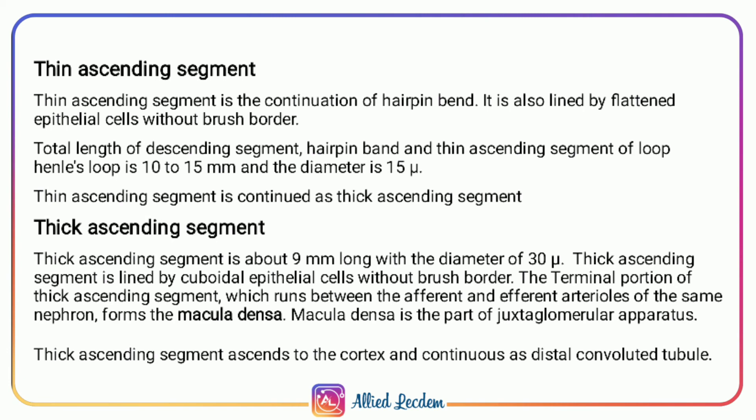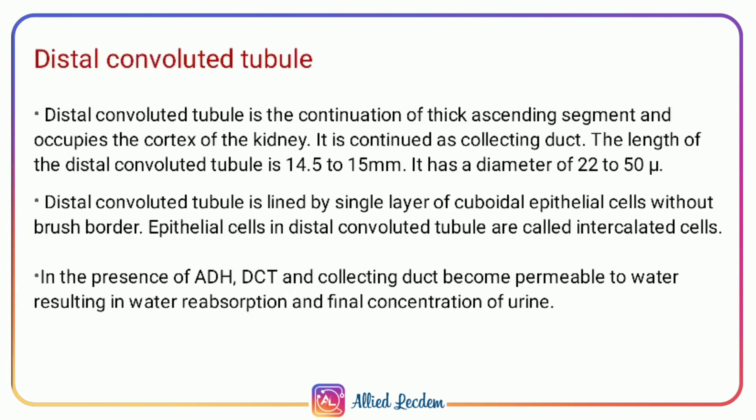The thick ascending segment ascends to the cortex and continues as the distal convoluted tubule, which occupies the cortex of the kidney. The length of the distal convoluted tubule is 14.5 to 15 millimeters and the diameter is 22 to 50 micrometers. In the presence of ADH, the distal convoluted tubule and collecting duct become permeable to water, resulting in water reabsorption and final concentration of urine. It is lined by a single layer of cuboidal epithelial cells without brush border.